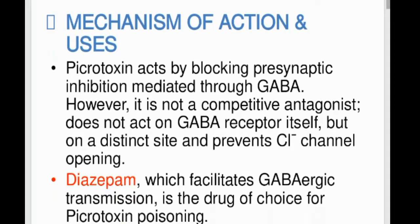Its mechanism of action involves blocking presynaptic inhibition mediated through GABA; however, it is not a competitive antagonist and does not act on the GABA receptor itself. Diazepam, which facilitates GABAergic transmission, is the drug of choice for picrotoxin poisoning.